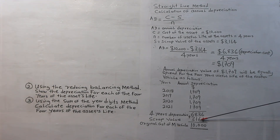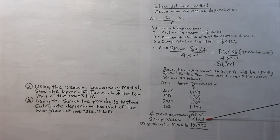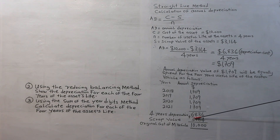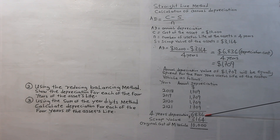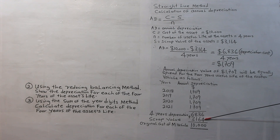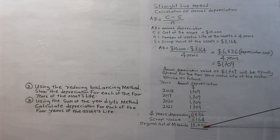The implication is that the organization already knows that at the end of the 4-year useful life, the motor vehicle scrap will be sold for $3,164. What they pursued to realize through depreciation is $6,836, the depreciation cost. If they realize this and add it to the scrap value, it gives $10,000, which is the original cost of the motor vehicle.